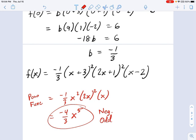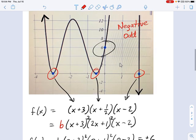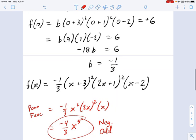The y-intercept matches. The power function end behavior matches. And we already went over all the multiplicities of this thing. So, that is how you backwards graph.